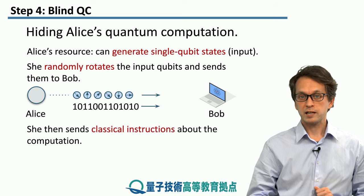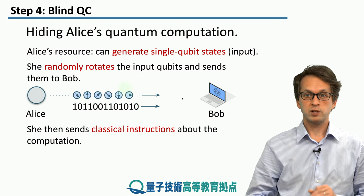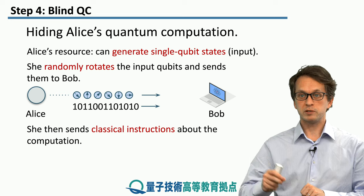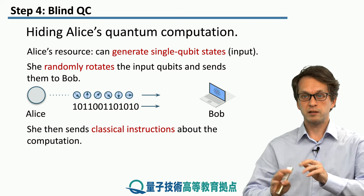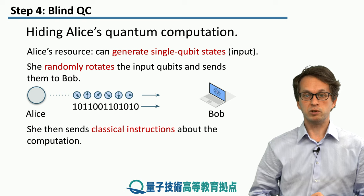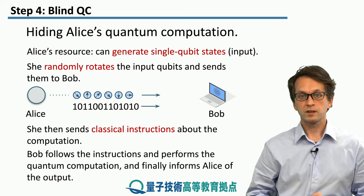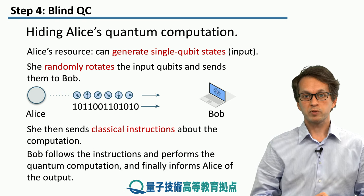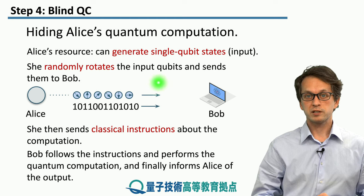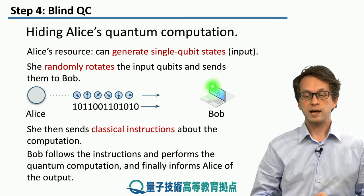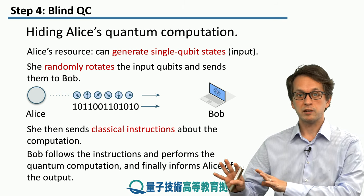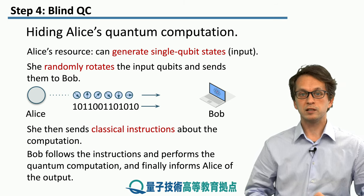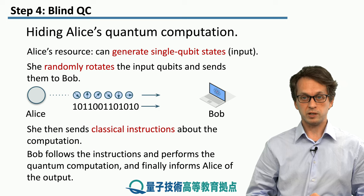Then she sends him classical instructions about the computation, directing Bob: take qubit 1, perform this operation; take qubit 2, perform that operation; take these two qubits and entangle them using this gate, and so on. In this way, Bob can perform whatever she is instructing him to do and then just return the final outcome, communicating either in a quantum way or classically to Alice about the result of the computation.